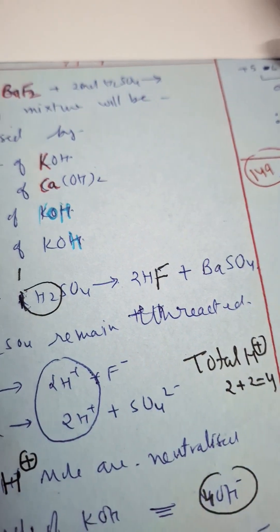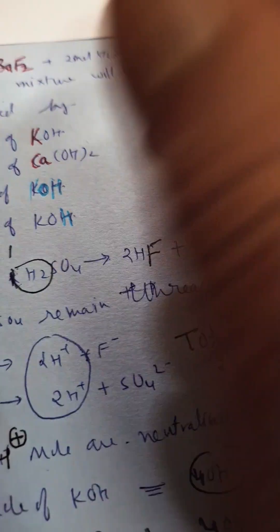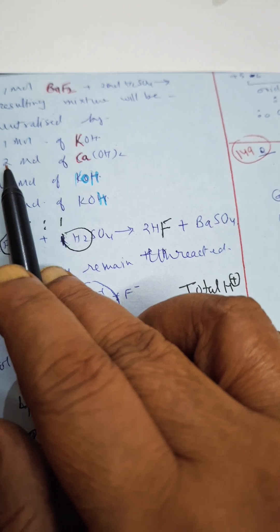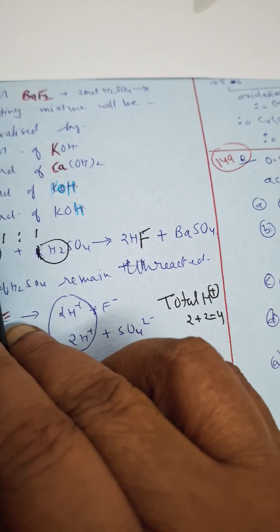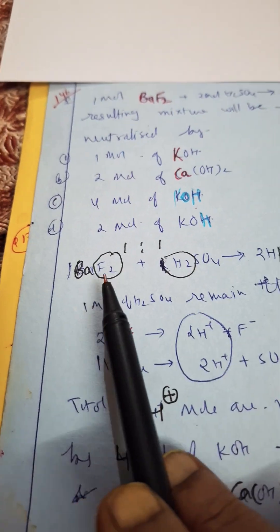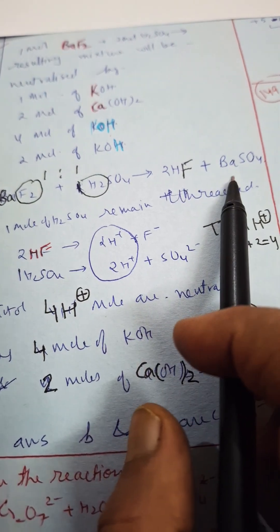Hello students, here we are doing a redox problem. One mole of barium fluoride when it reacts with concentrated H2SO4, the resulting mixture will be neutralized by: one mole of KOH, two moles of Ca(OH)2, four moles of KOH, or two moles of KOH. These are the options given to you. They are giving the reaction BaF2 plus H2SO4 gives HF and BaSO4.